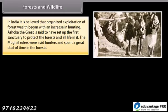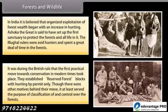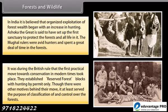In India it is believed that organized exploitation of forest wealth began with an increase in hunting. Ashoka the Great is said to have set up the first sanctuary to protect the forests and all life in it. The Mughal rulers were avid hunters and spent a great deal of time in the forests. It was during British rule that the first practical move towards conservation in modern times took place. They established reserved forest blocks with hunting by permit only, which served the purpose of classification and control over the forests.